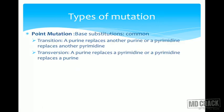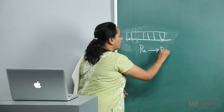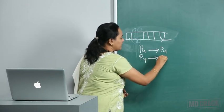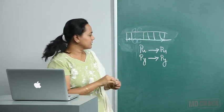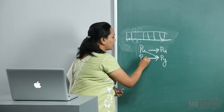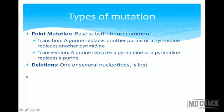The first type of mutation is point mutation, meaning a single base has been altered. In base substitution, we have two types: transition, where a purine replaces another purine (or pyrimidine replaces pyrimidine), and transversion, where a purine is replaced by a pyrimidine or vice versa.